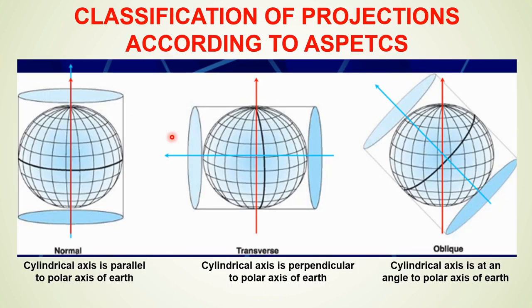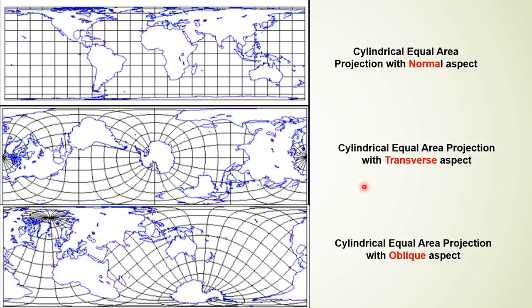On the basis of aspect, cylindrical projections may be classified into three types: normal — when the axis of the globe and the cylinder are the same or parallel; transverse — when the axis is perpendicular to the polar axis; and oblique — when the cylinder is at an angle to the polar axis. This gives different resulting map appearances for each aspect.